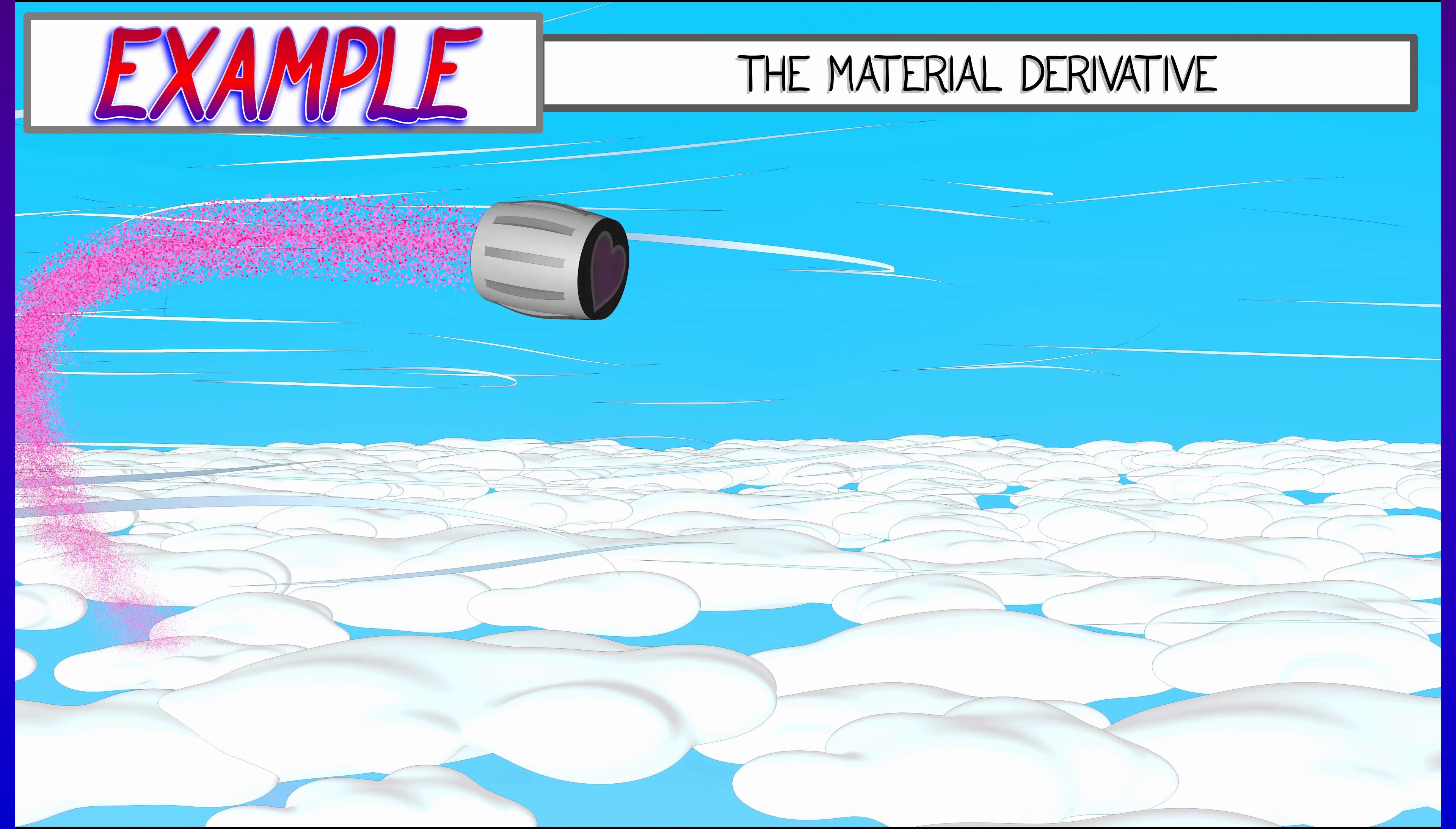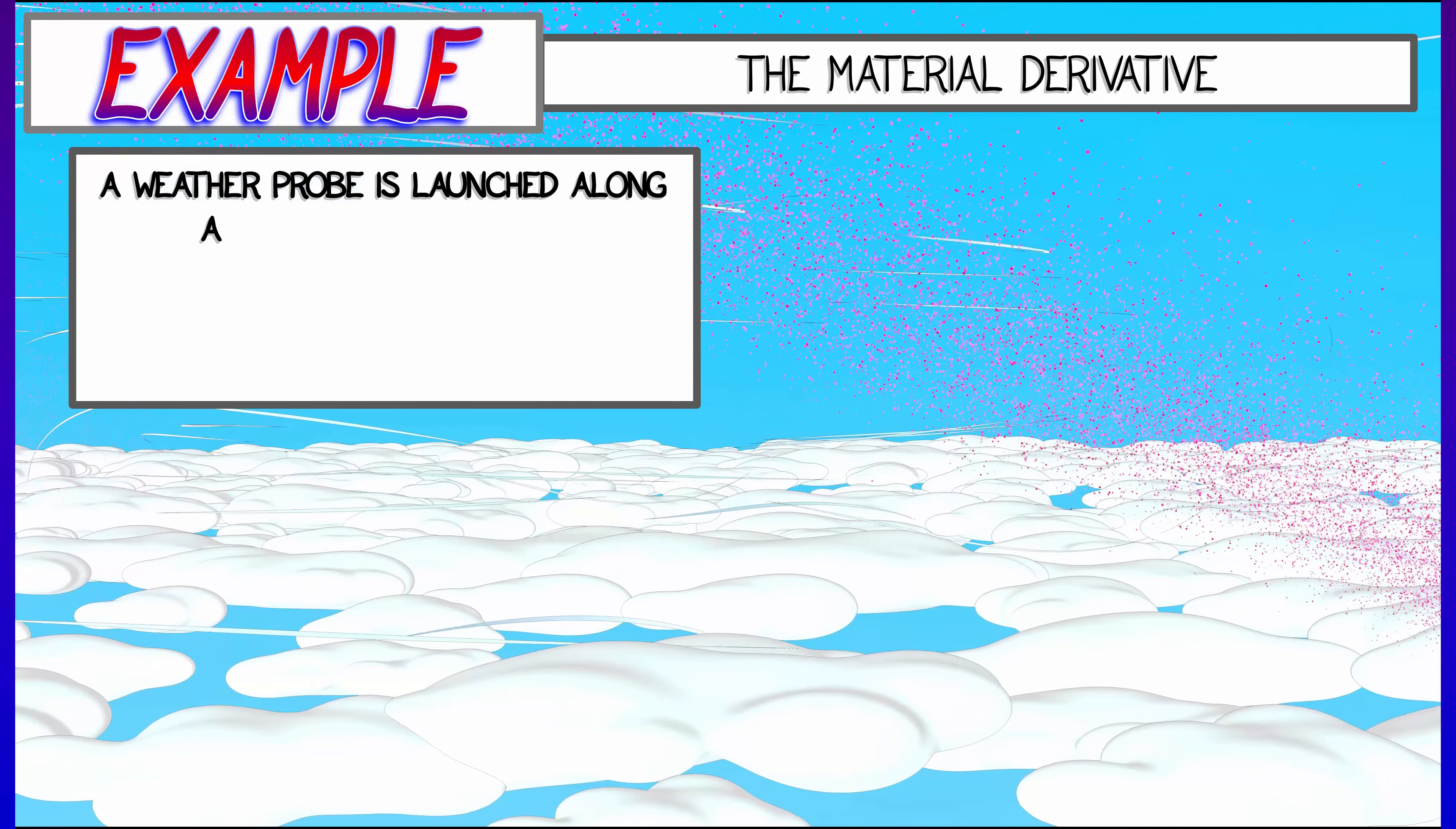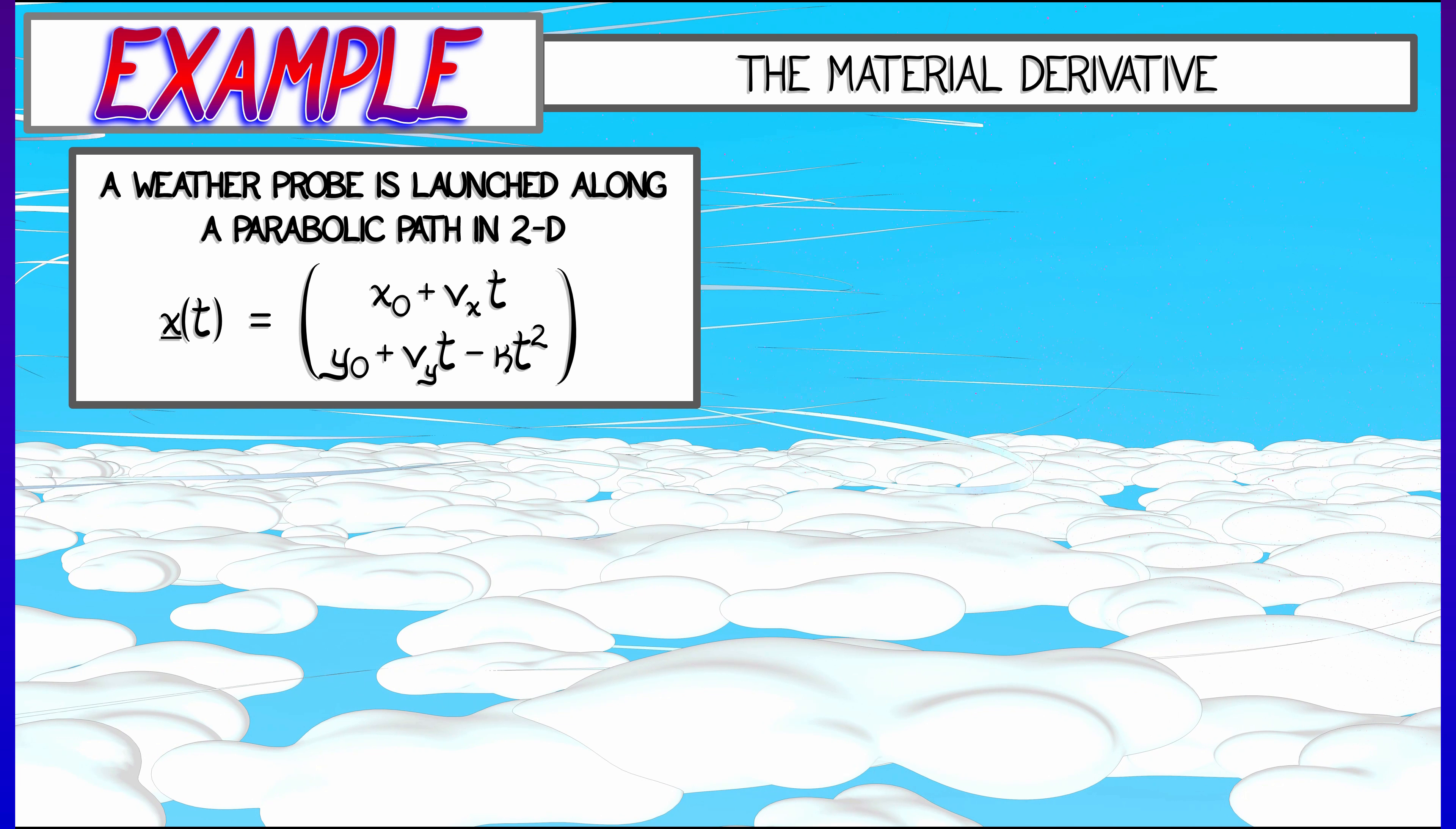And that projectile is measuring the temperature as it moves through the atmosphere. Let's say a simple example: it's moving along a parabolic path and we're just going to keep track of X and Y. We're going to say that the X coordinate is varying linearly in time and the Y coordinate is changing along some parabolic path.